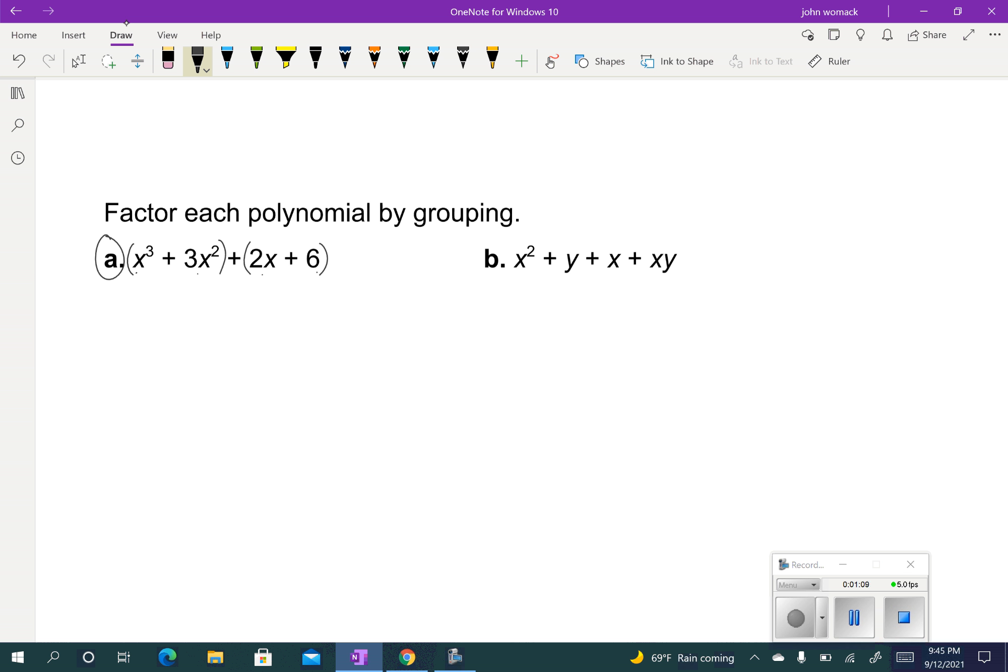There's still going to be a plus in between. Then I'm checking for a common factor between those two smaller groups. Just looking at these first two, they have a common factor. They both have an x squared. So I'm going to factor out an x squared, and if I do, that leaves me with an x plus 3. Plus, look at those next two. The 2x plus 6 has a common factor of 2. So factor out a 2, and I'm left with x plus 3.